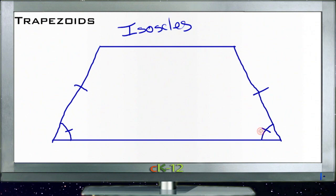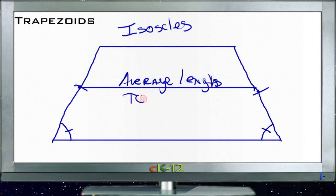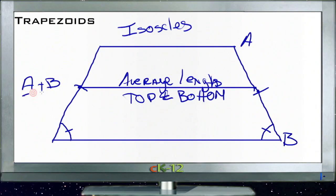It also means that the mid-segments of both of these lines, if we were to connect the mid-segments of the two sides, then we have another line that is parallel to the top and the bottom, and its length will be the average of the lengths of the top and bottom of the figure. So in other words, if we call this side A and this side B, then the mid-segment length would be A plus B divided by 2.